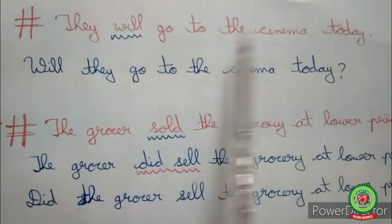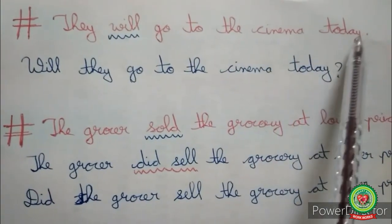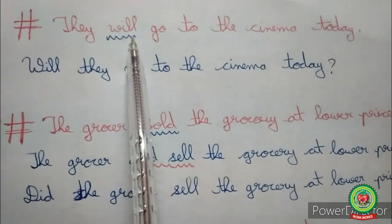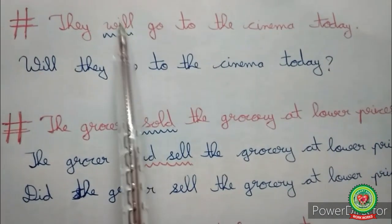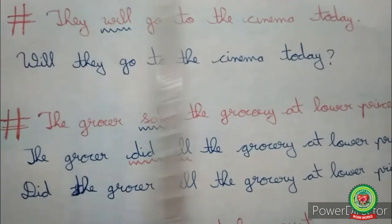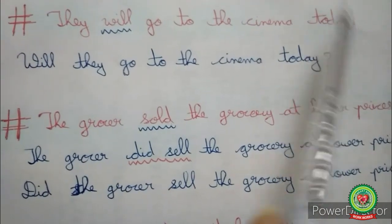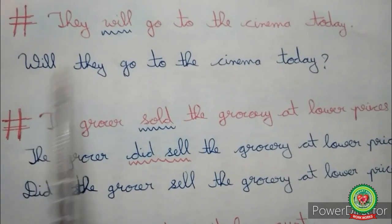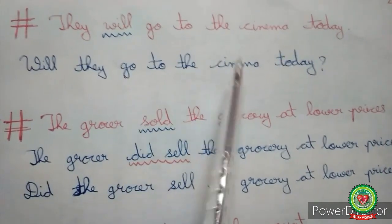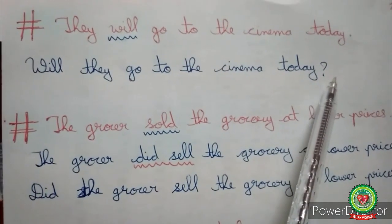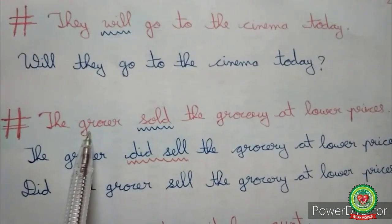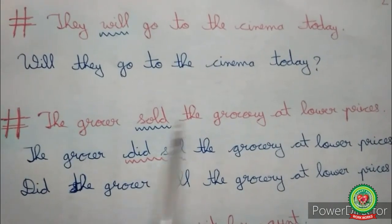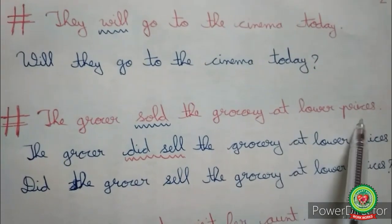See the first sentence: 'They will go to the cinema today.' Now in this sentence, 'will' is the helping verb, so we will place 'will' in the beginning and insert a question mark at the end. The interrogative sentence will be: 'Will they go to the cinema today?'